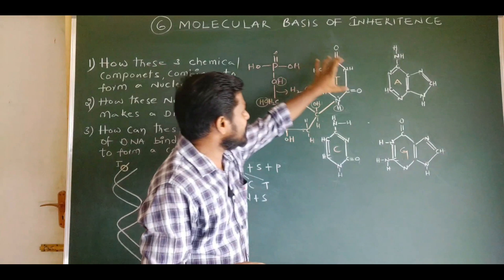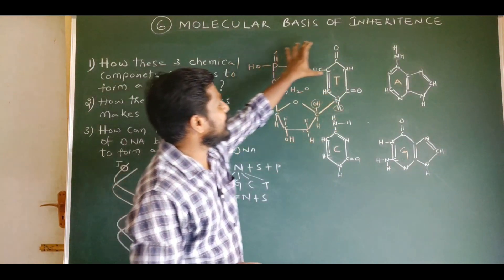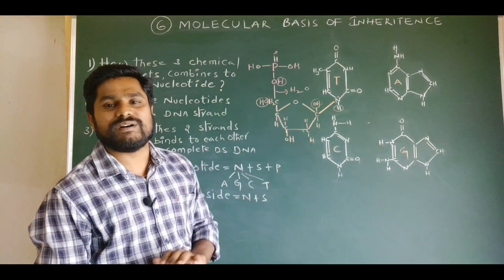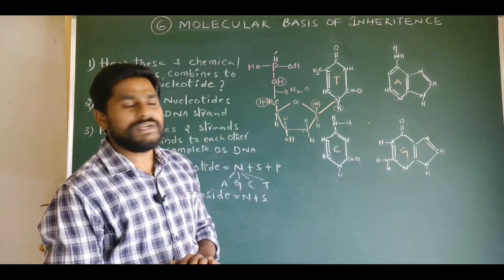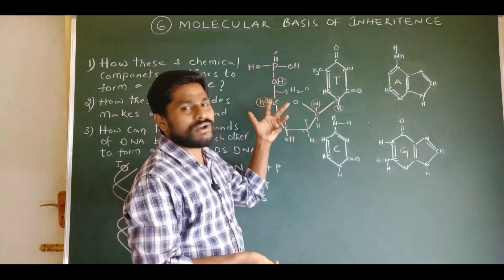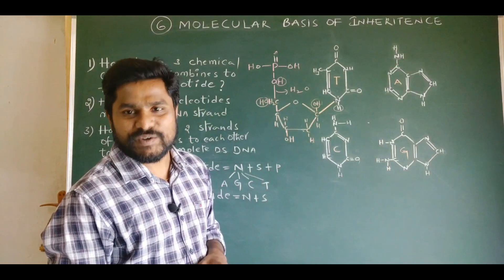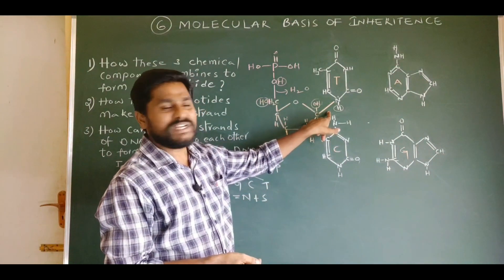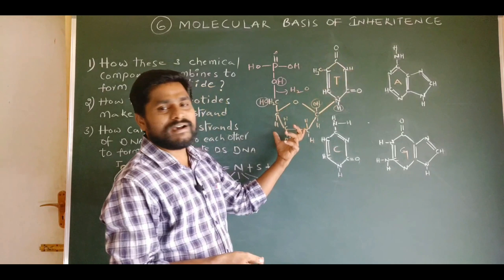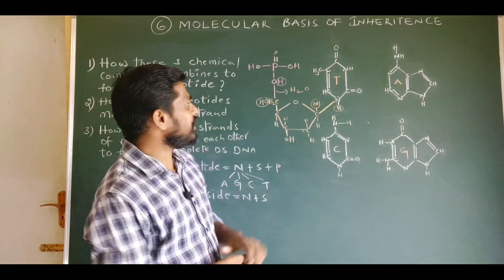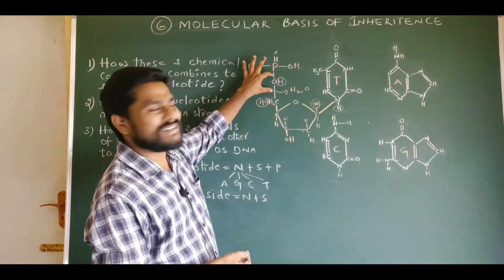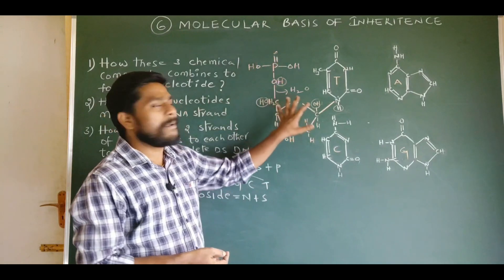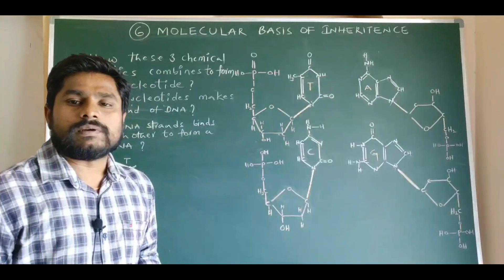This is the complete structure of a nucleotide of one strand of DNA. We can see there are two bonds in a nucleotide: one is a glycosidic bond, which is between the nitrogen base and the pentose sugar; and another is the phosphoester bond, between the phosphate group and the pentose sugar.